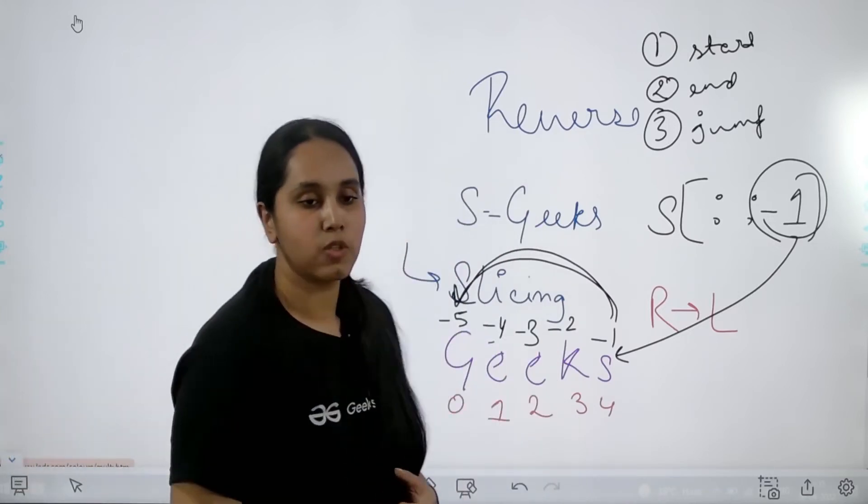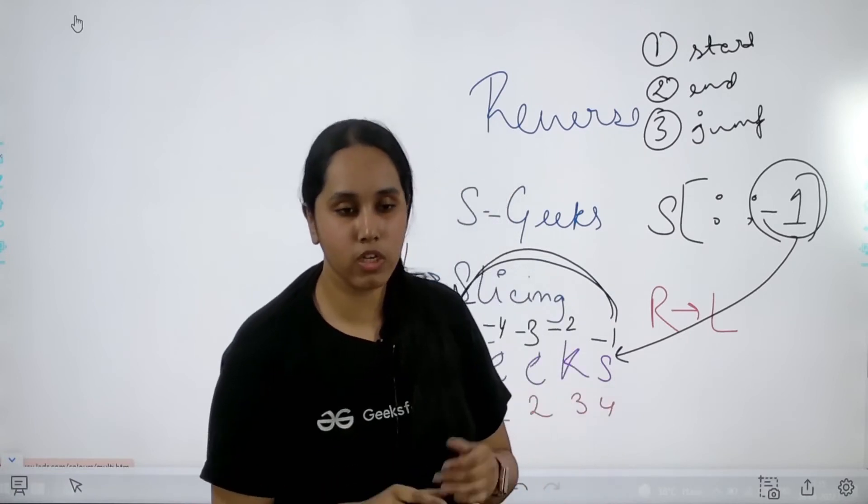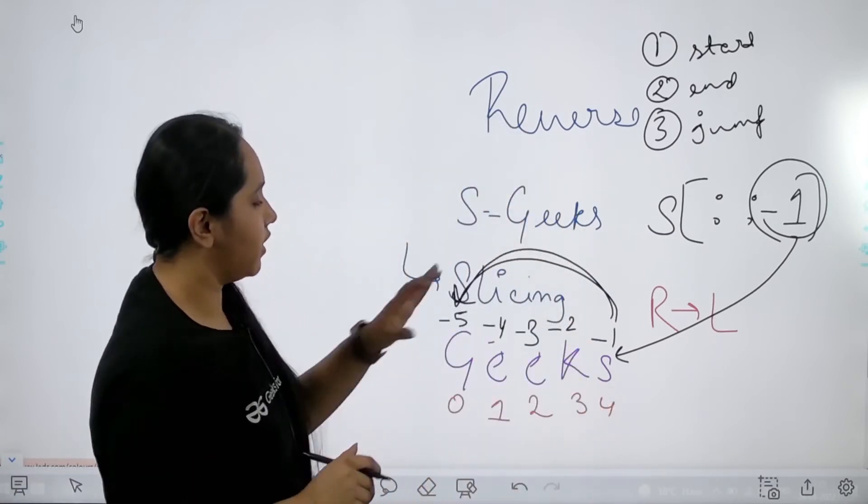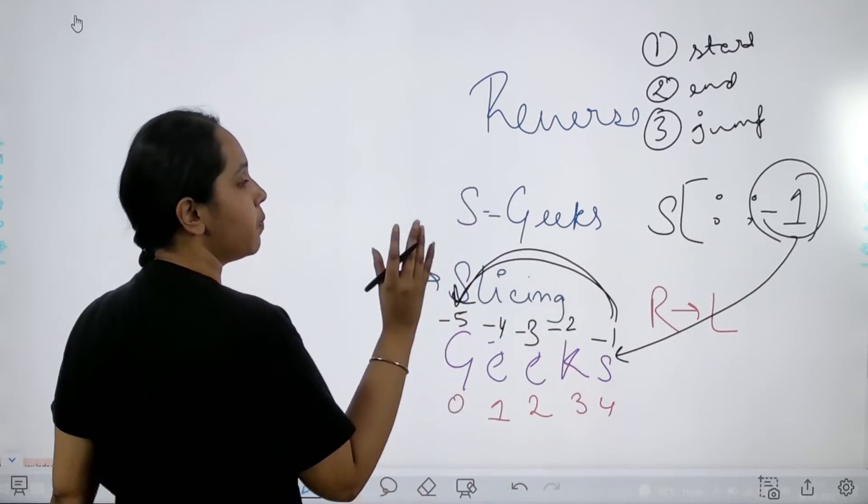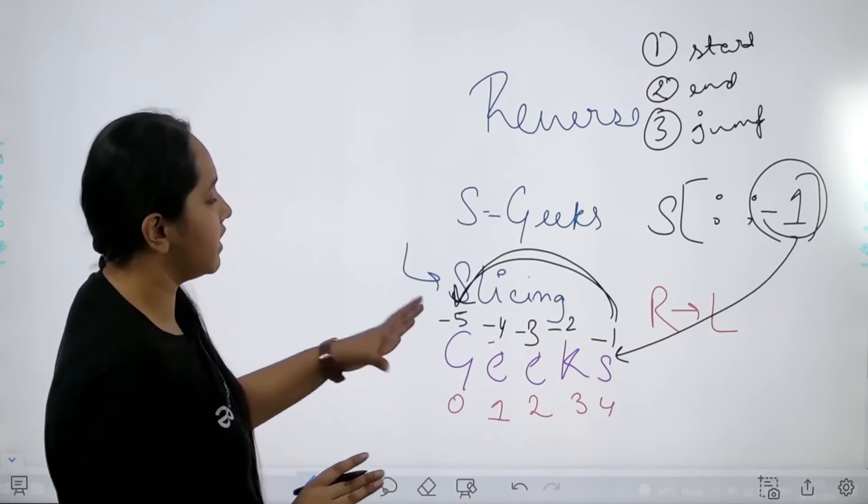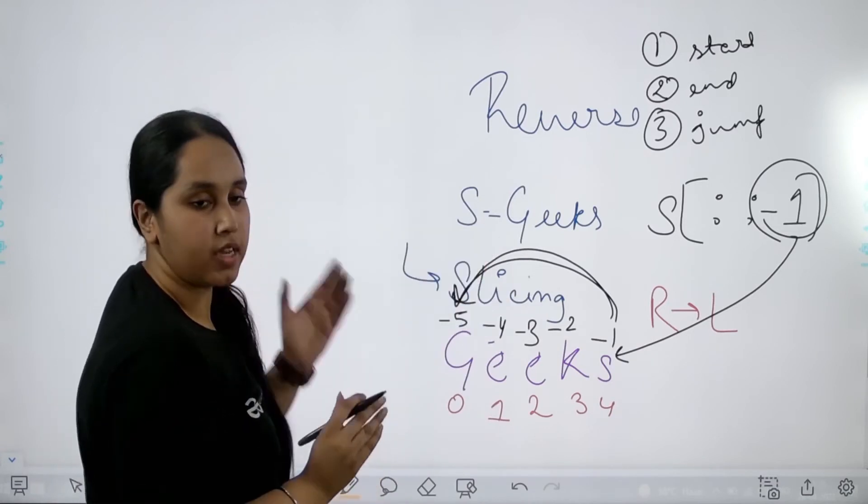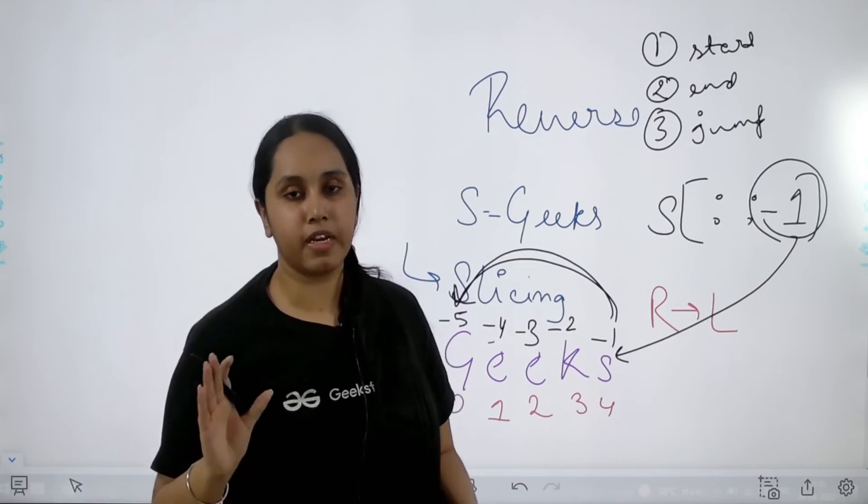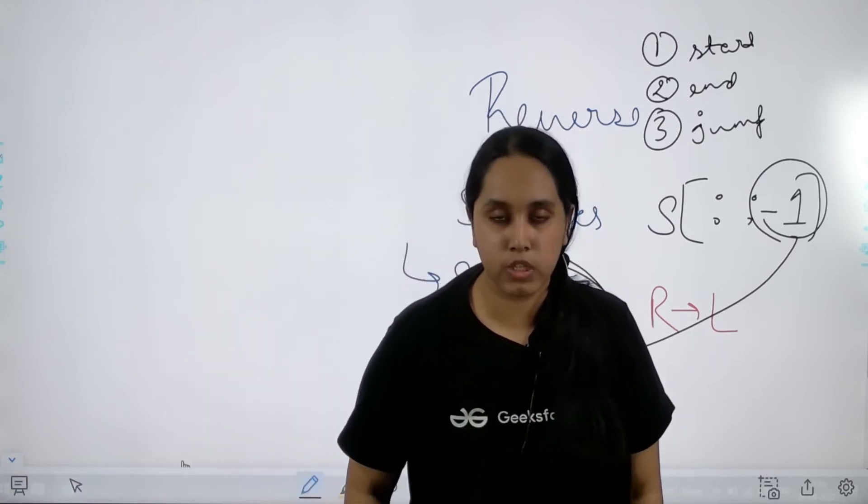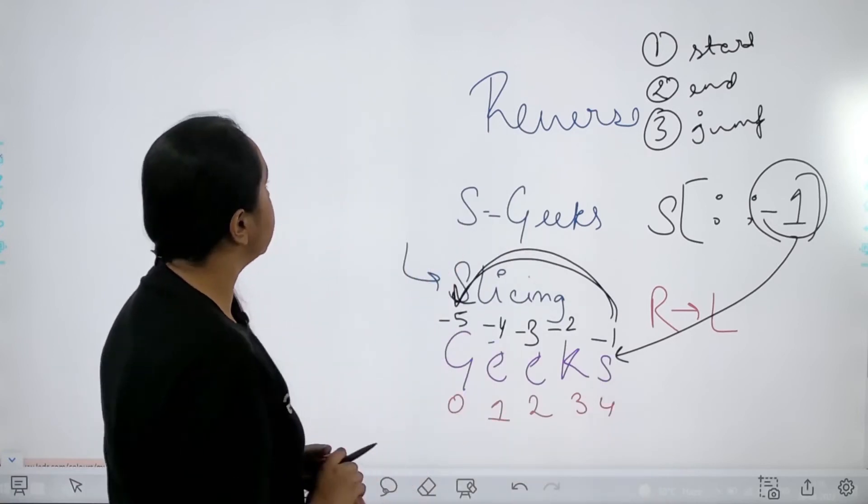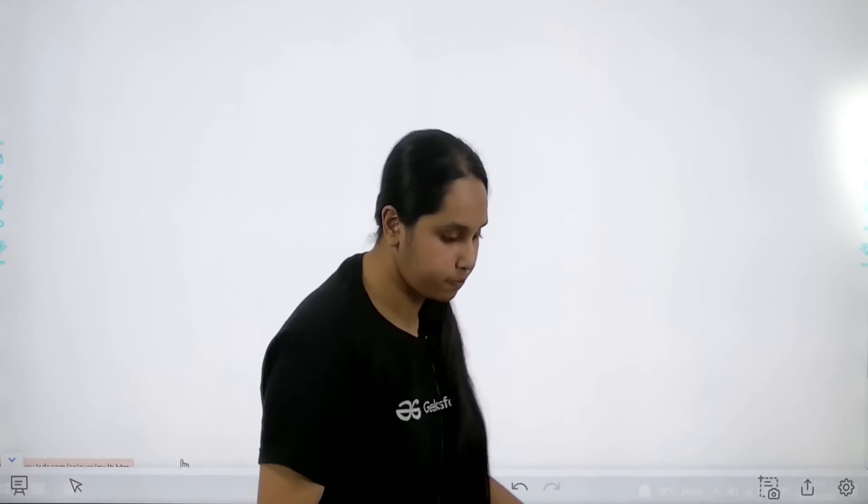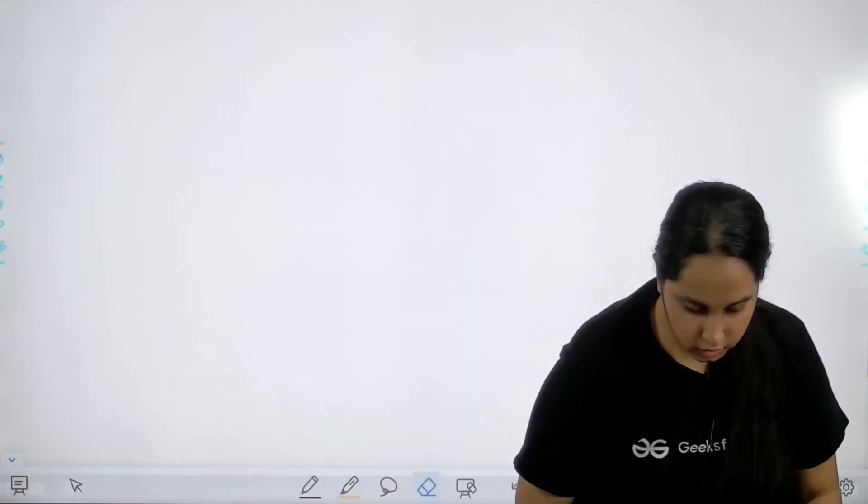Now by using this solution, just by specifying minus 1, I can simply solve this problem. I can just simply do the string in a reverse order, I can just print it. So this is the concept of slicing that we would be using today. Now using this concept I would be coding it in Python. So let us start.